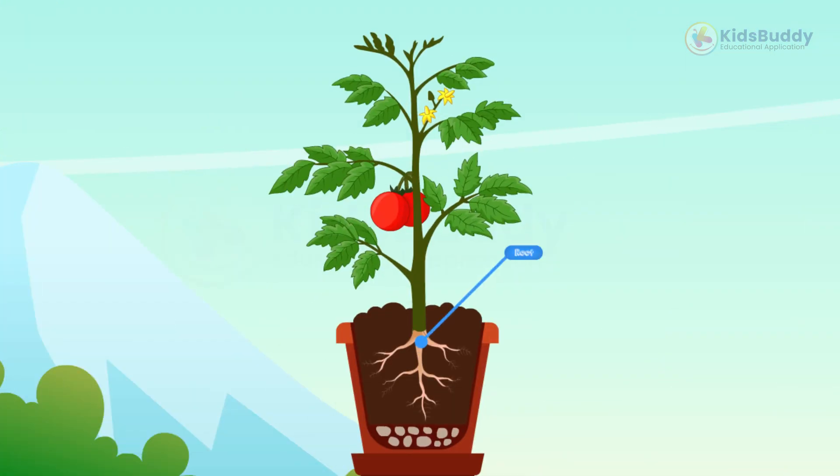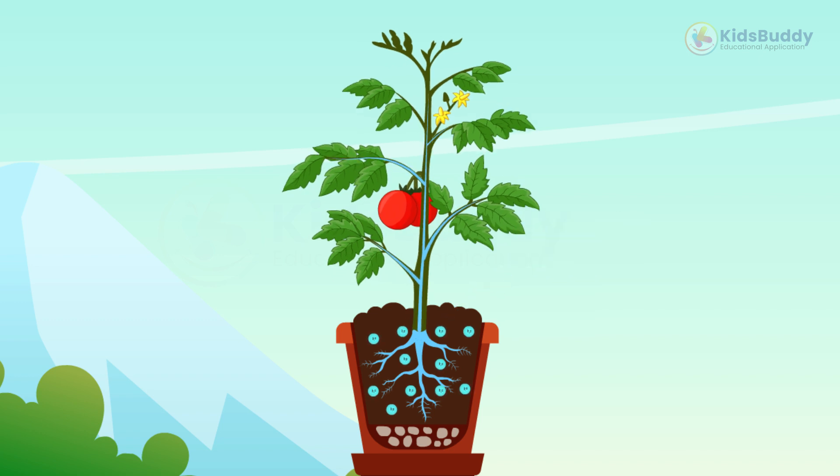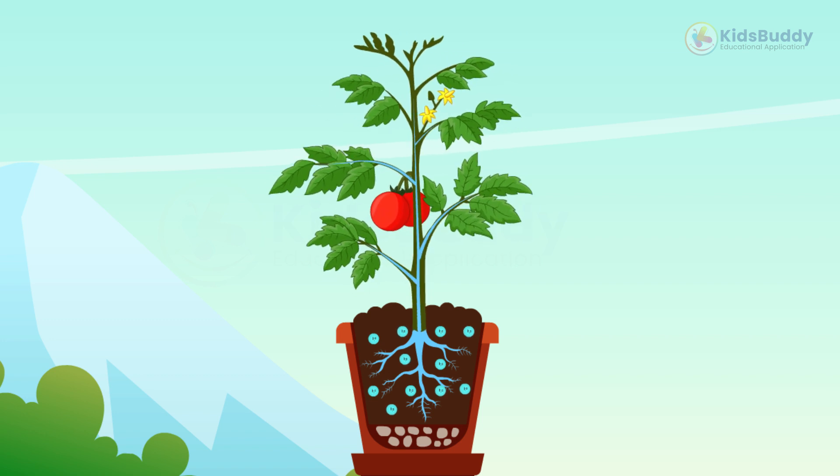The roots of a plant are responsible for absorbing water and minerals from the soil. They also anchor the plant to the ground and help support the stem.